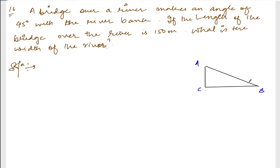A, B is a bridge which makes an angle of 45 degrees with the riverbank. What is the length of this one? It is 150 meters. This is how you understand the question. What is the width of the river? So we need to find out B, C.